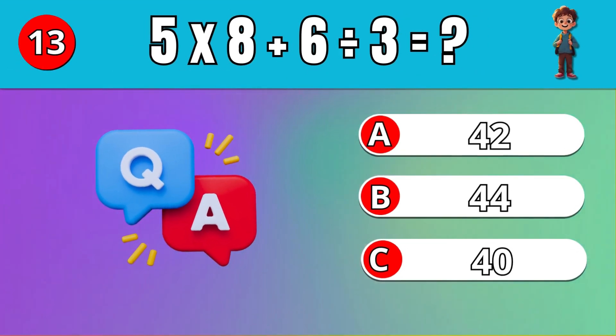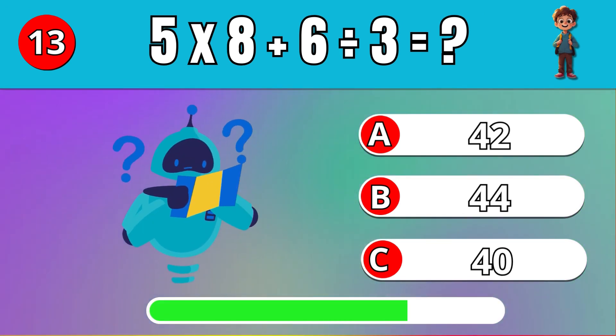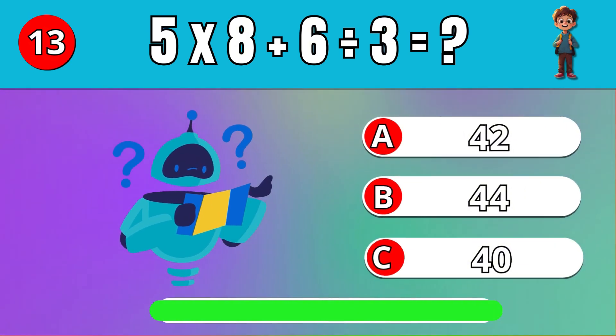What is 5 times 8 plus 6 divided by 3? 42.